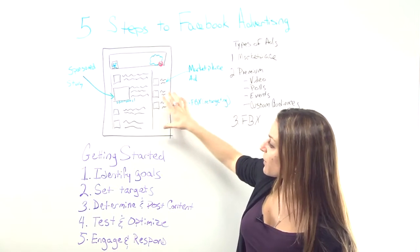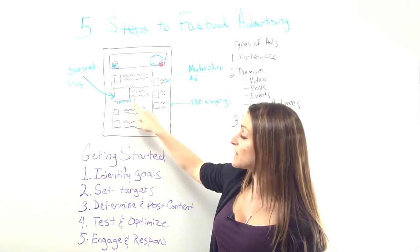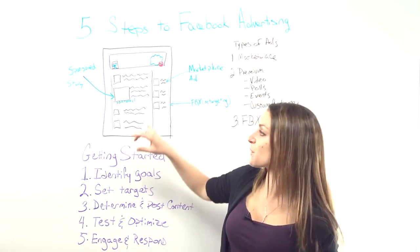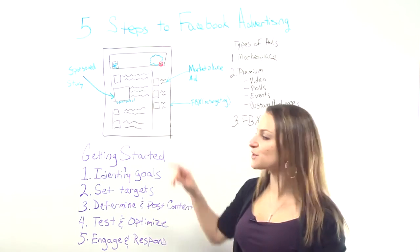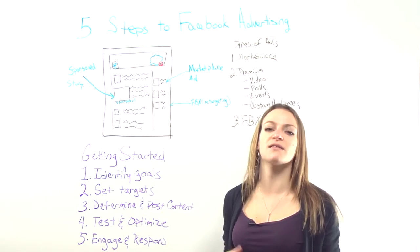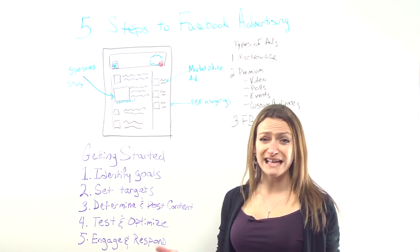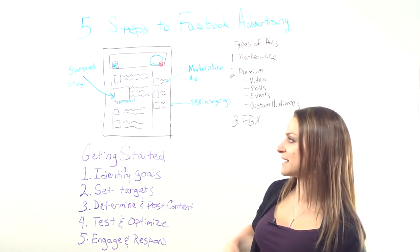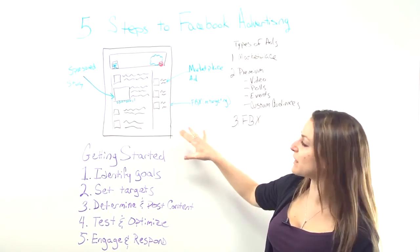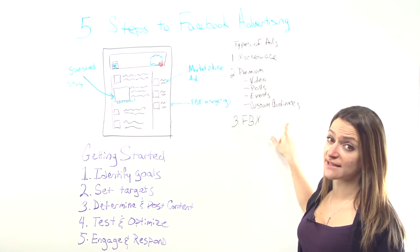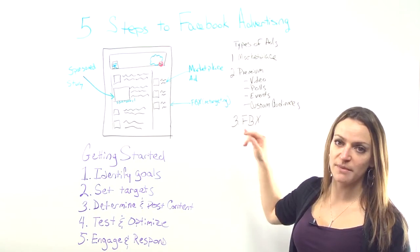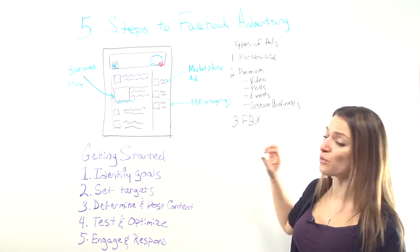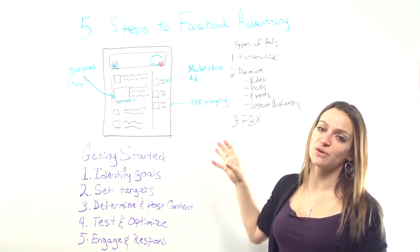With your premium ads, sometimes they'll show up on the right, but they'll also show up in the center of your Facebook page as well, with one of the big examples being your sponsored stories. Sponsored stories are a newer ad type that Facebook is really testing out right now. Types of premium ads include video ads, polls, and event pitches.